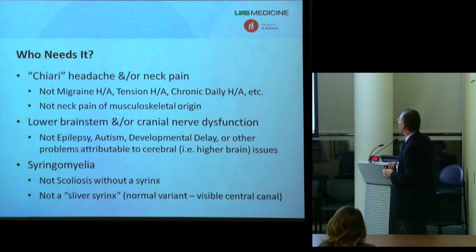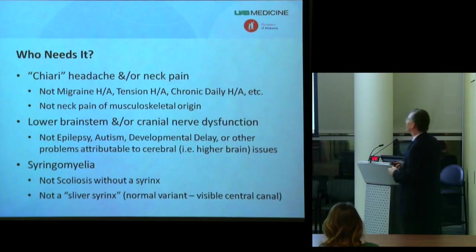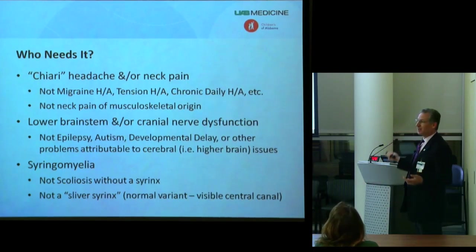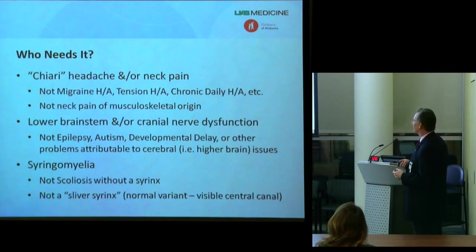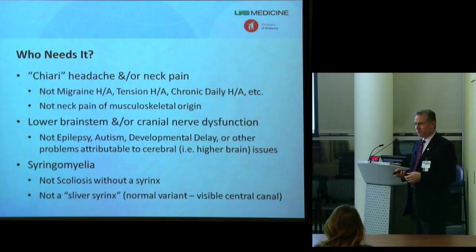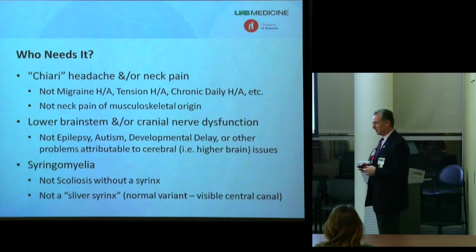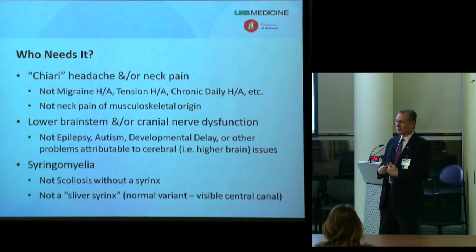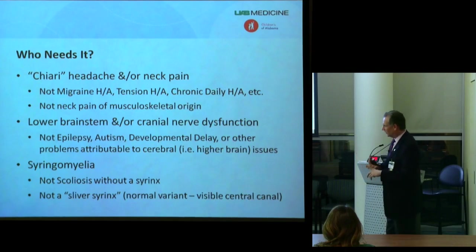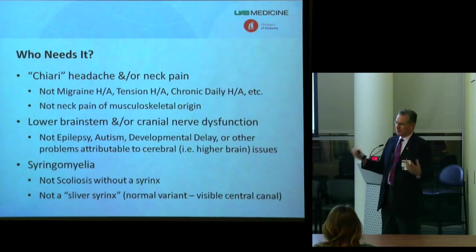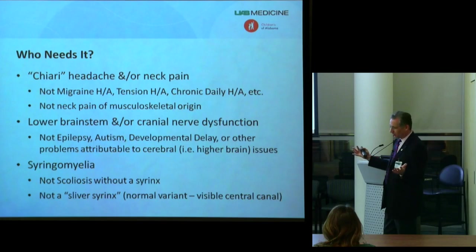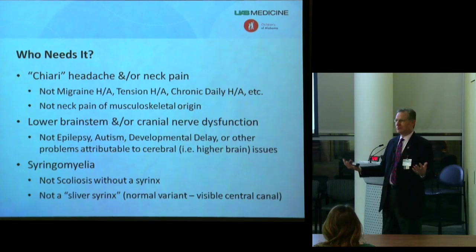Patients who have the kinds of problems I've just described — fitting into those categories — are patients we can pretty reliably help with surgical intervention. The surgical intervention is directed at correcting the underlying problem of compression of neural elements and impaired CSF circulation. With regard to syringomyelia, the decompression tries to correct the impaired CSF circulation so that over time the driving force that created the syrinx is taken away and the syrinx can gradually collapse and correct itself.